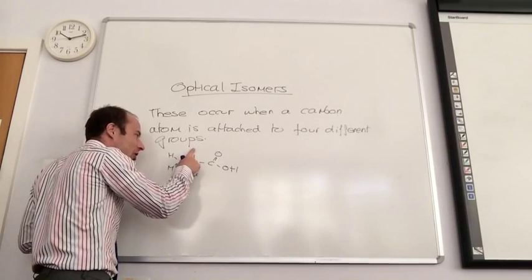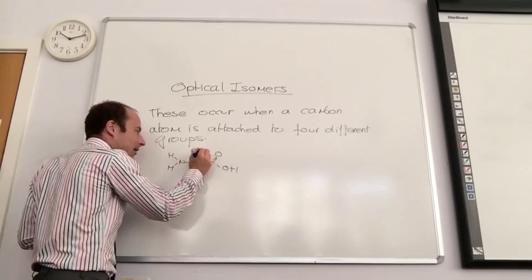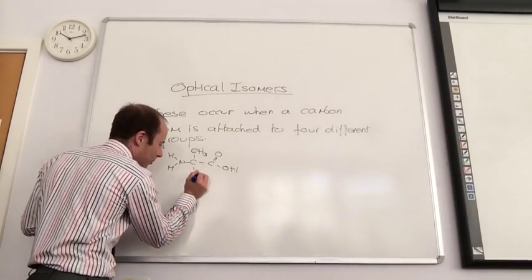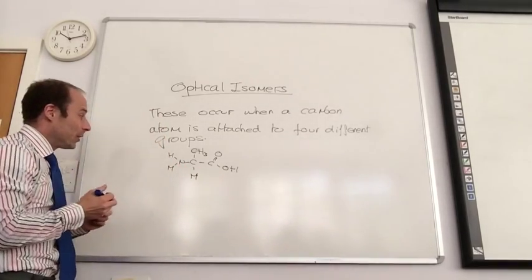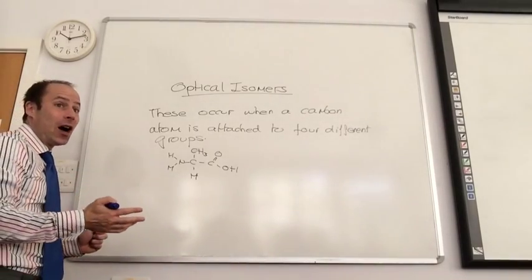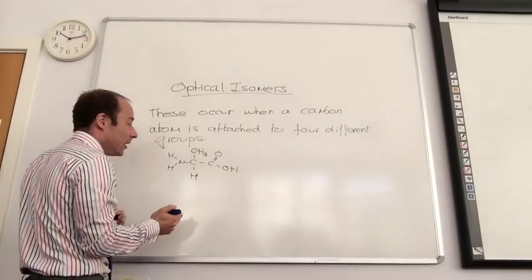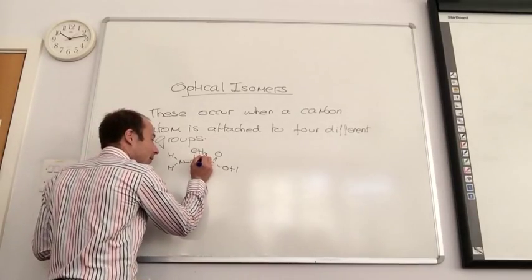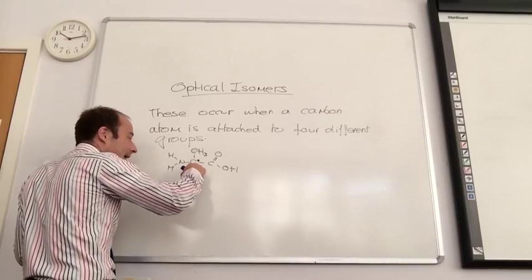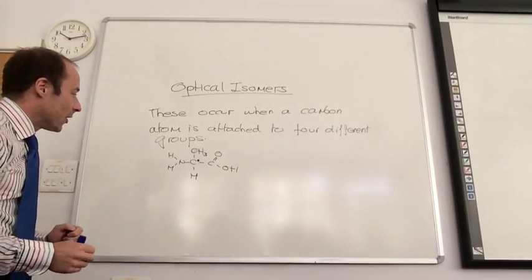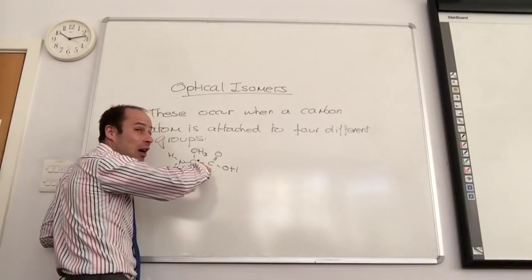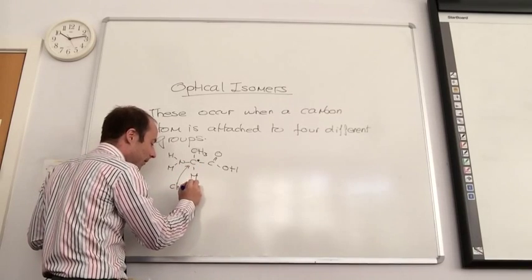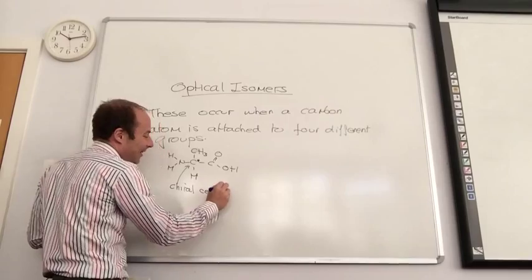It has to be four different groups. If I change that H to a CH3, I have now got a methyl group, carboxylic acid, a hydrogen, and an amine group. Which means I now have a carbon attached to four different groups. To show it's an optical isomer, I put a little star by him. He's the star of the molecule. He is the carbon that's got the business going on. And he is called a chiral center. So that there is my chiral center.